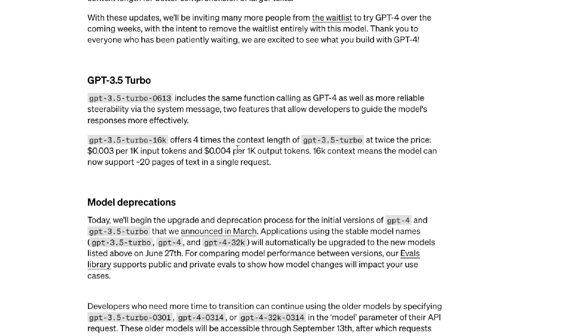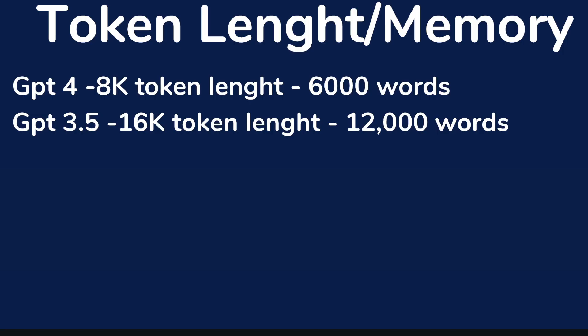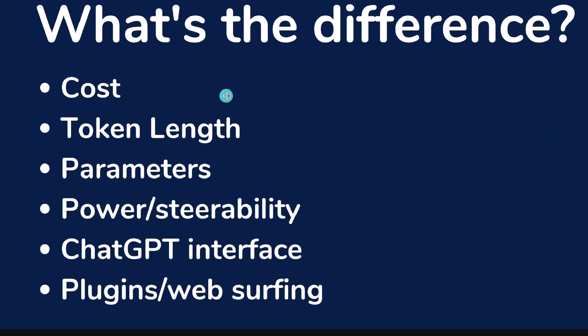So you're able to get a lot more inputs and outputs for half the cost when using GPT-3.5 turbo compared to GPT-4. In terms of token length, GPT-4 at 8k tokens gives you around 6,000 words of memory, while the GPT-3.5 16k model gives you about 12,000 words to work with — divided between your input and output. You get significantly more token utilization with GPT-3.5.